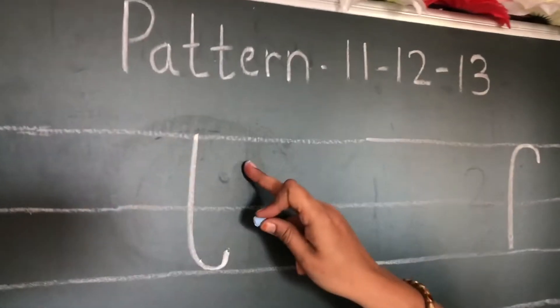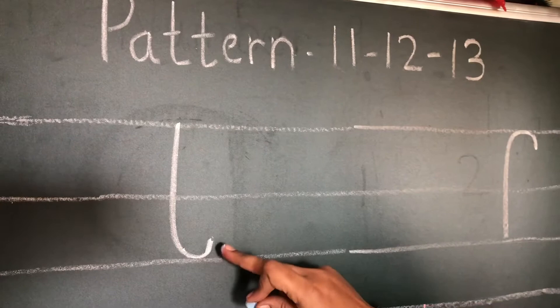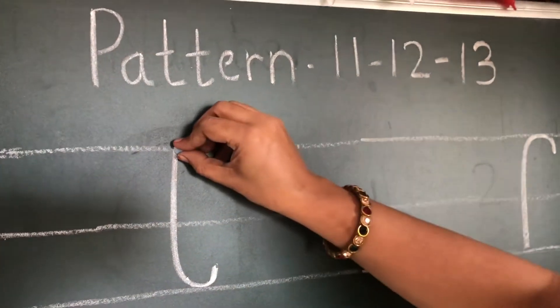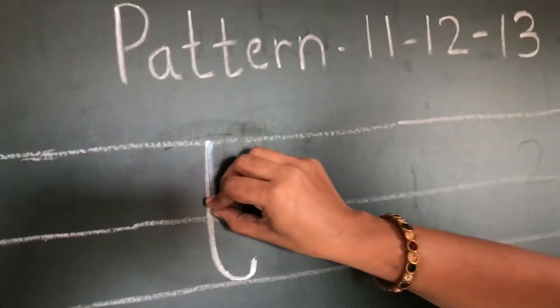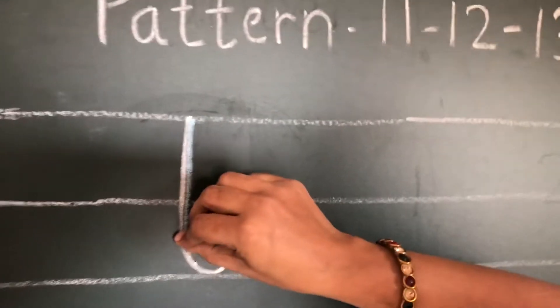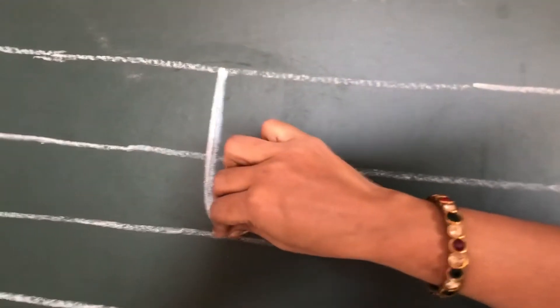Now, what is next? It looks like a hockey stick. See, it is coming down, down. Like a standing line, and then again it is turning.